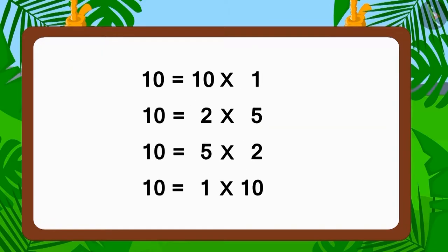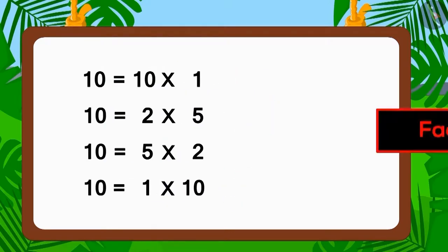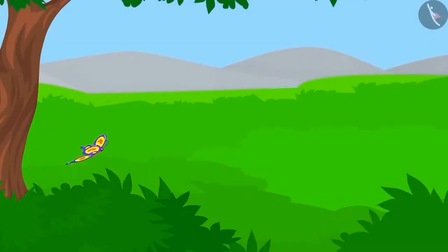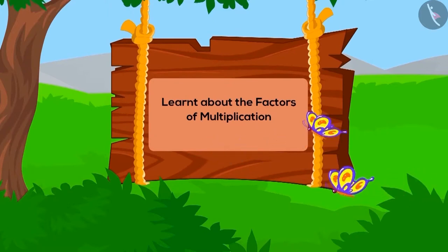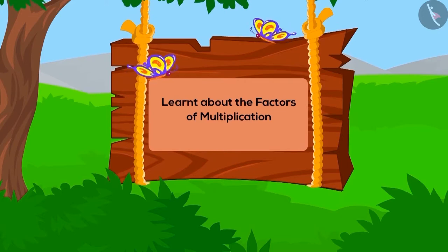The two numbers that form part of the multiplication are known as factors. Here, one, two, five, and ten are factors of ten. Children, in this lesson we learned about factors of multiplication. In the next two lessons, we will see some interesting examples of the same.